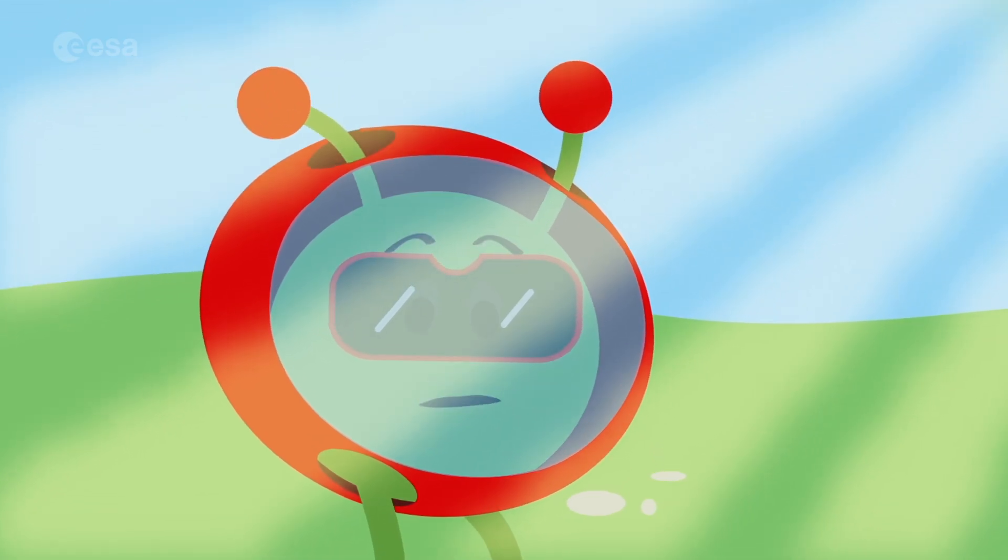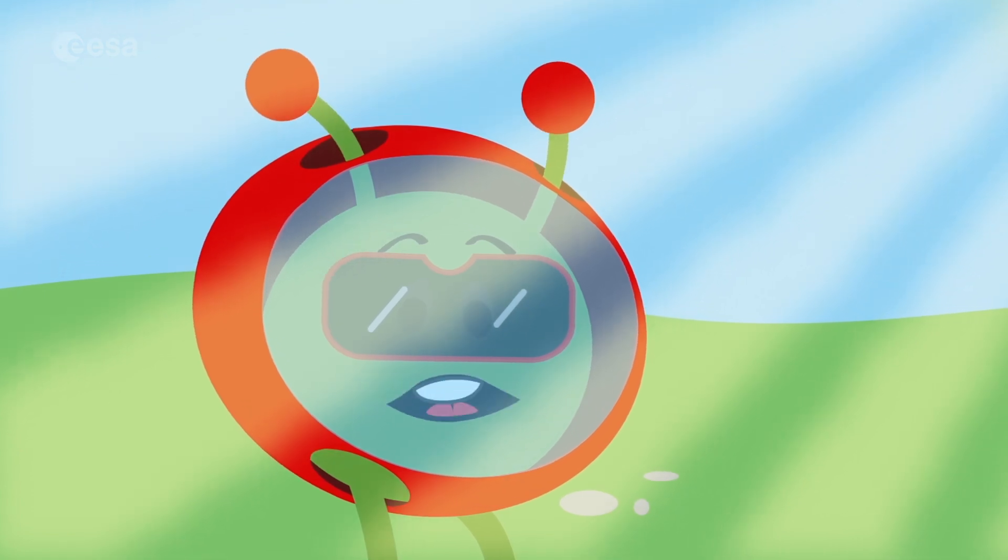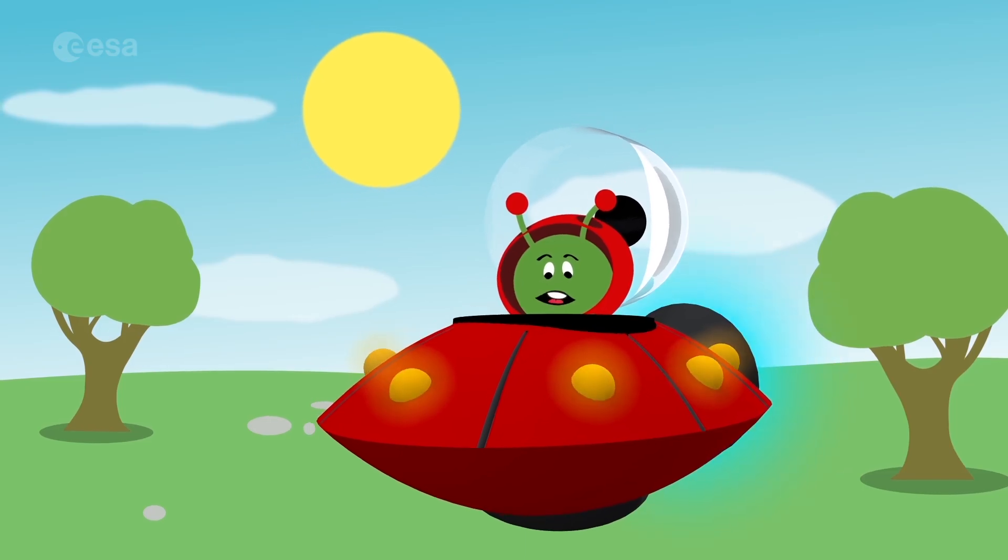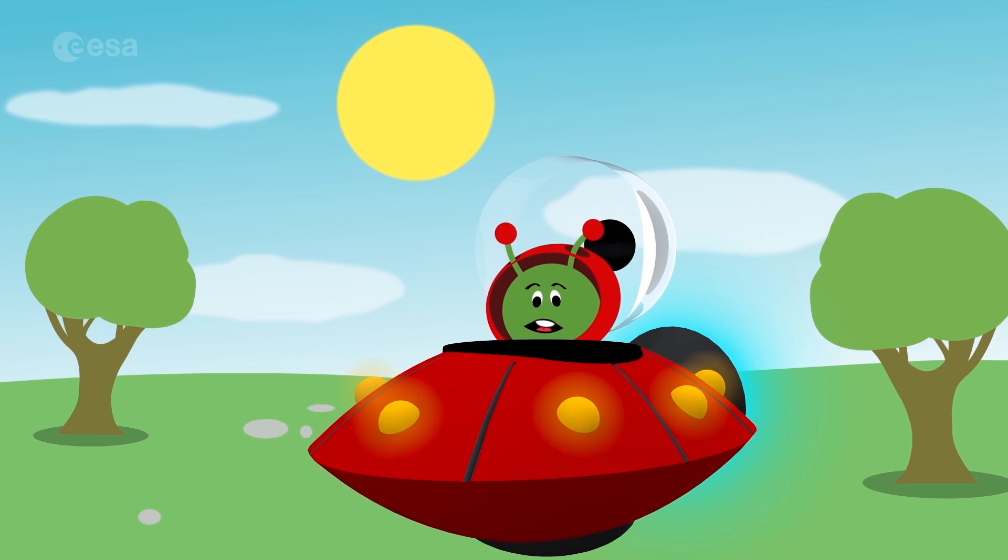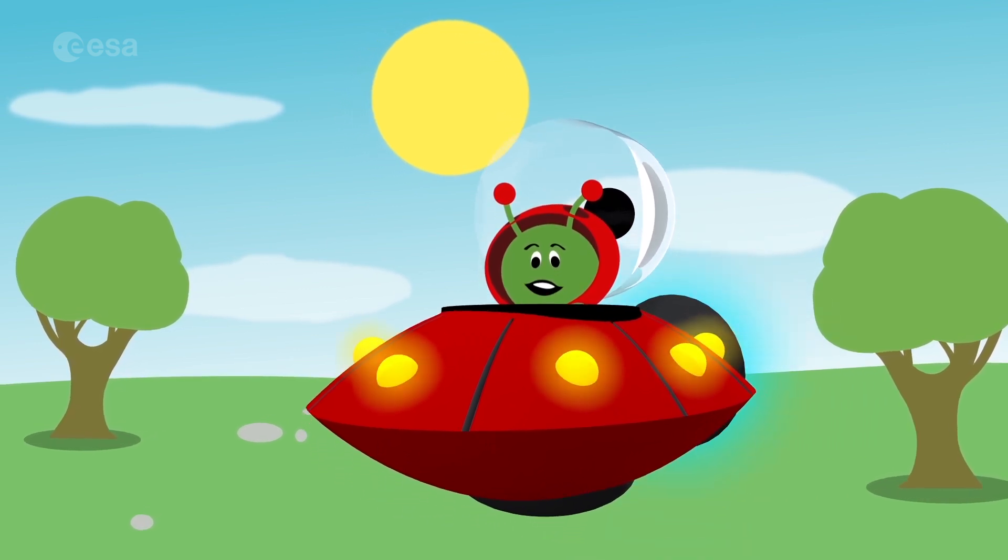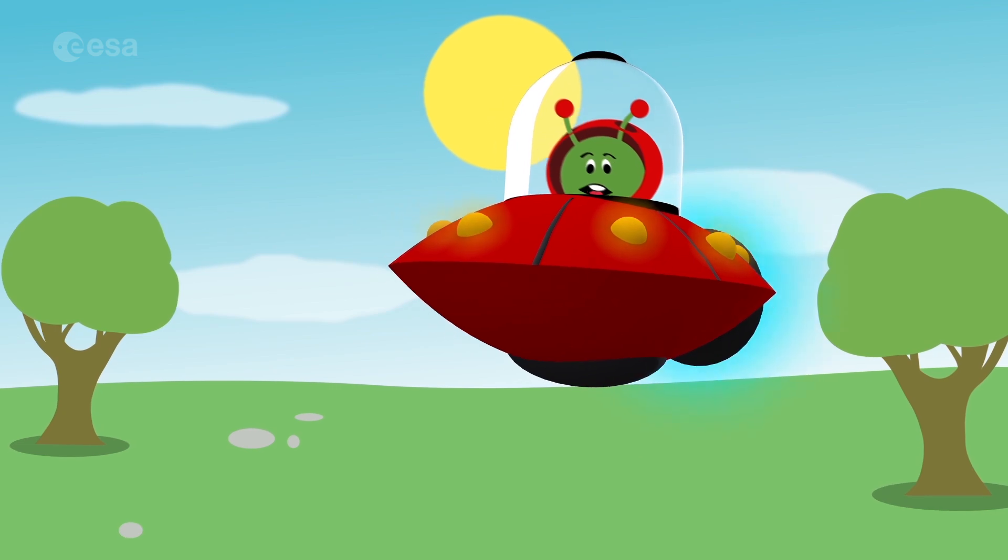The sun gives us light and warmth. Perfect for my holiday. From down here, it looks like the sun and stars move around Earth. But is that what's really happening? Let's find out.